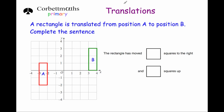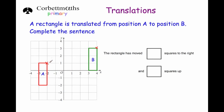Next question. A rectangle has been translated from position A to position B. It says complete the sentence: the rectangle has been moved blank squares to the right and blank squares up. I'm going to choose a point — the top right corner — and see how it moves to the corresponding top right corner on position B. It's very important you go from the same point. Counting across: one two three four five six squares to the right, and one two squares up.